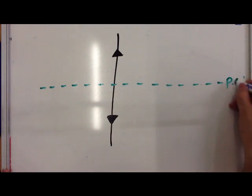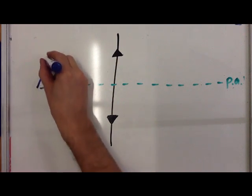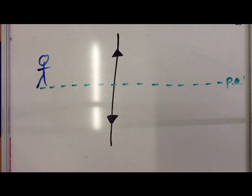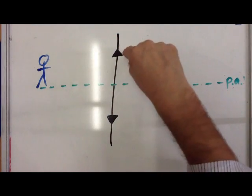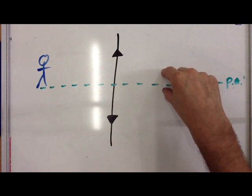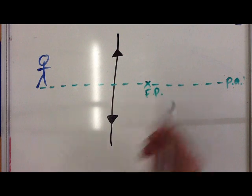The principal axis there. Now, if our object is a man stood over here, then because it's a converging lens, we know that when the ray lines come through from this person through the lens, they have to get closer together towards a focal point. Our focal point in this case, let's put it here.